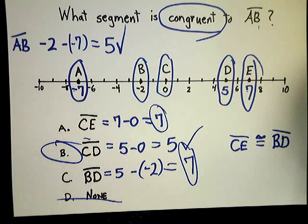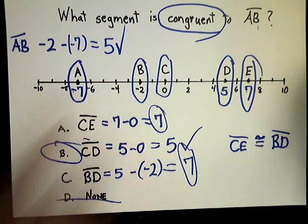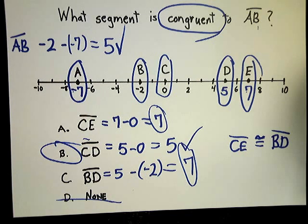That's ruler postulate. It's very simple. You shouldn't have any trouble with it. Just make sure you do minus negative if you have a negative on the left. And you should be good. Good luck.